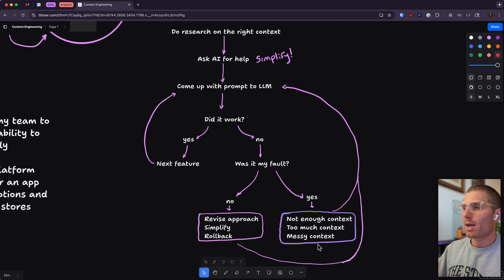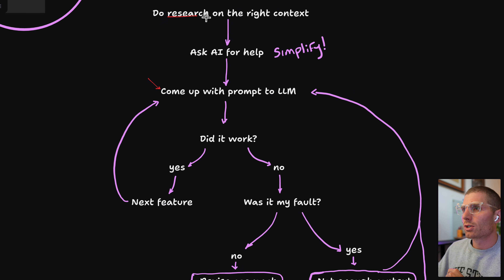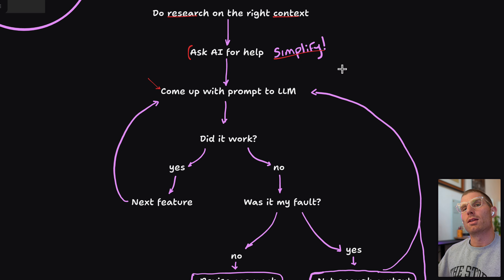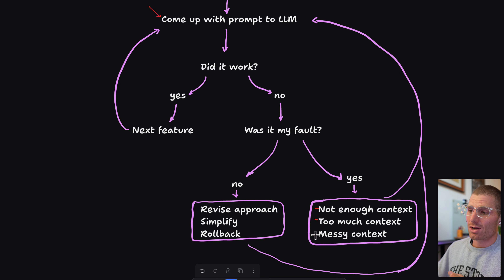So what have we established? Coming back to our decision tree: if you're really stuck, you can go up the ladder and do research on the right context to include in your prompts — that might involve asking AI for help, simplifying those outputs, and pointing AI to the right tools, whether that's web search or the Replit documentation. That second prompt we got from Claude is absolutely excellent for providing to Replit. Then we go through the same feedback loop: did it work? If not, was it my fault? If not, revise your approach — simplify, rollback. If so, there's probably not enough context, too much context, or messy context.